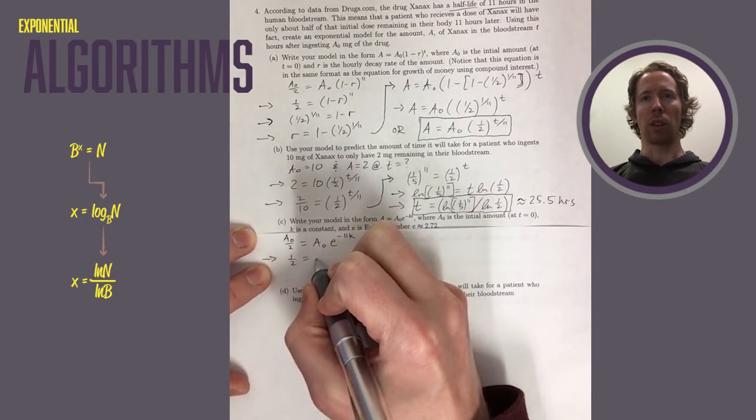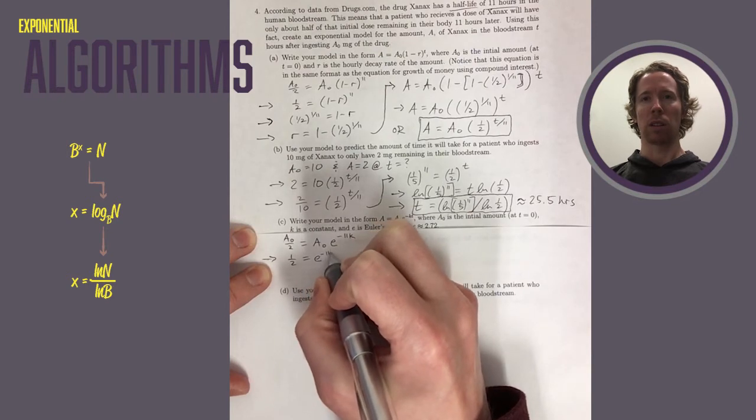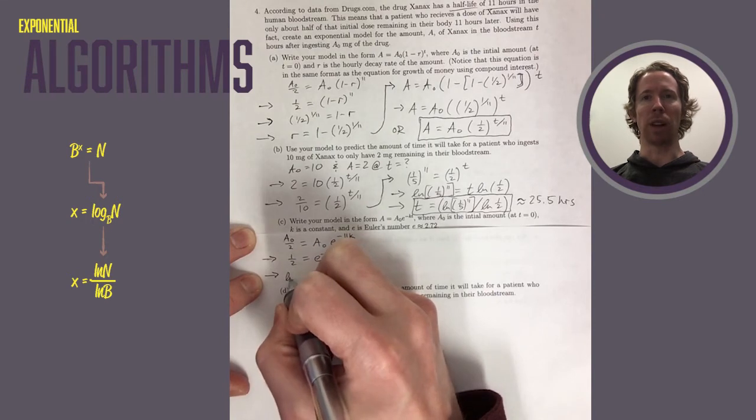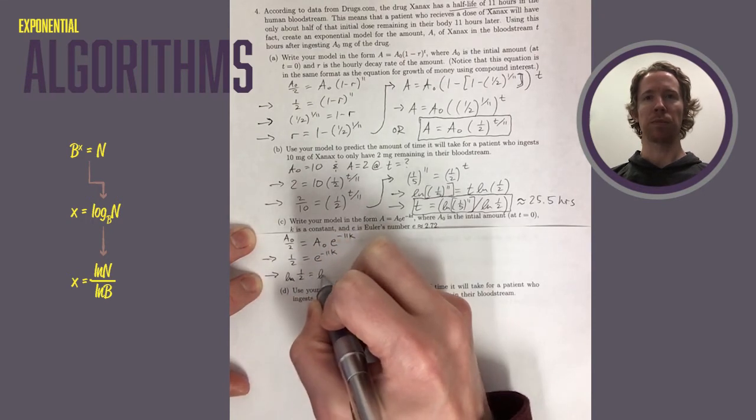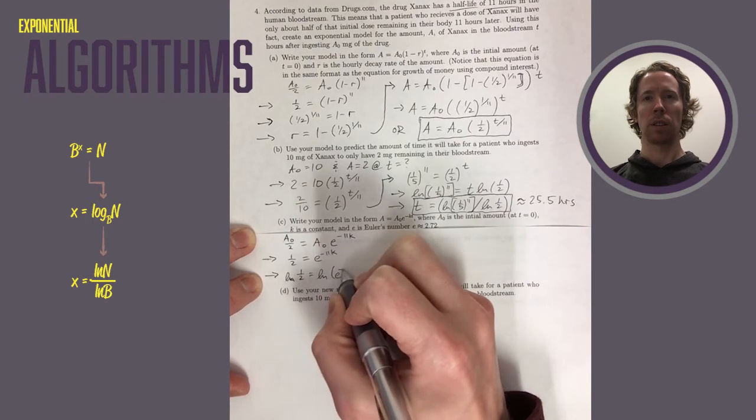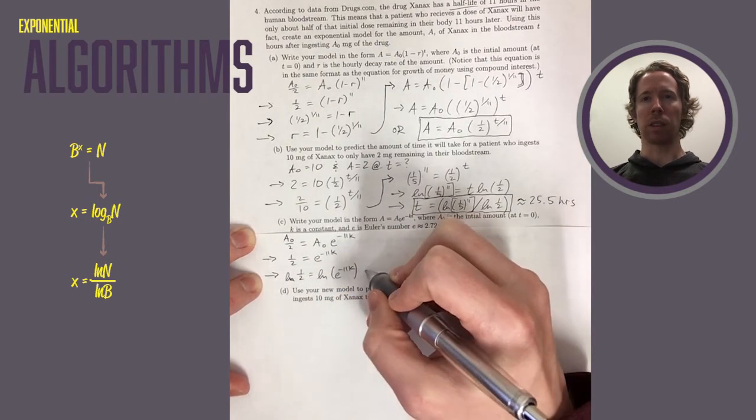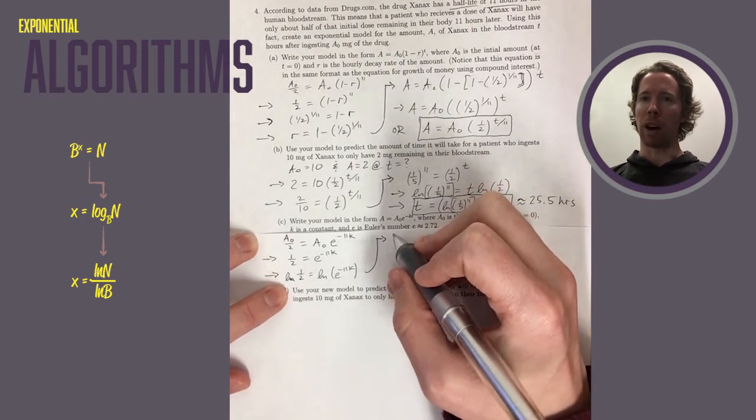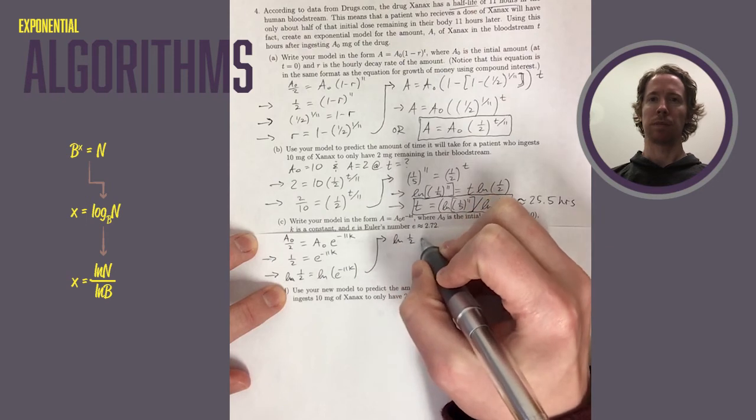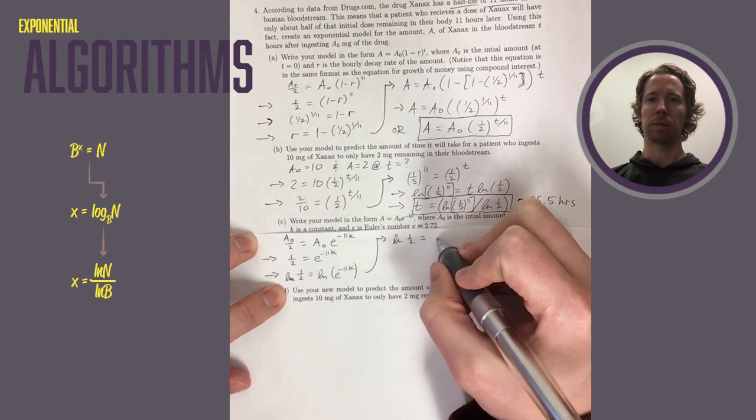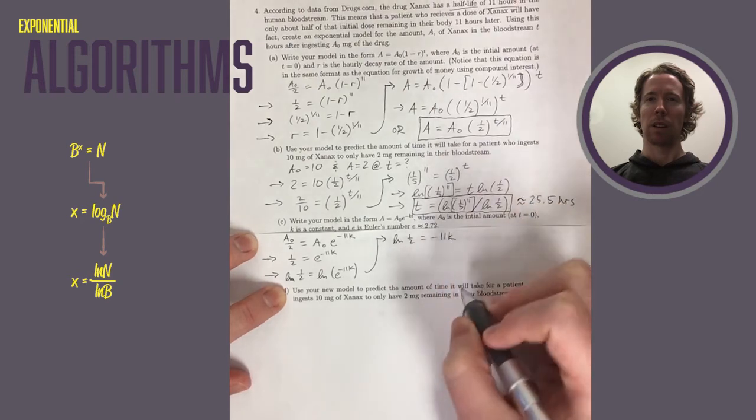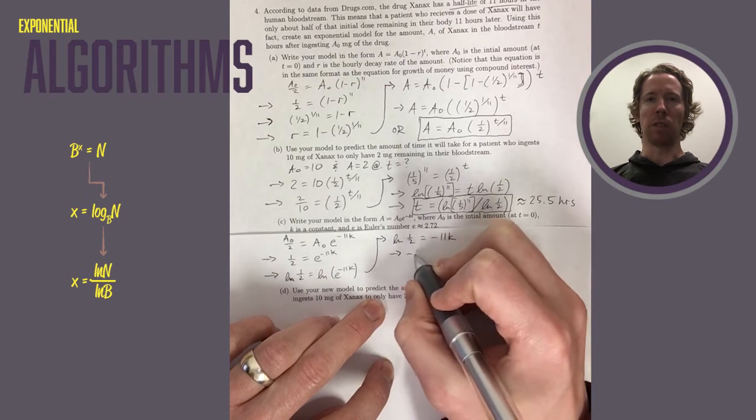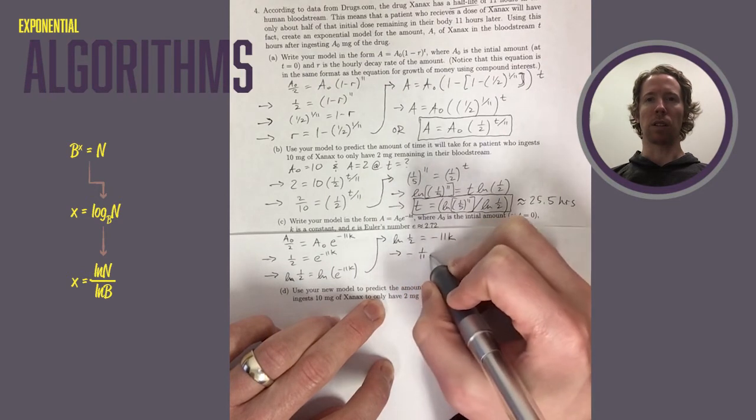Take the natural log of both sides. And on the right, when I take the natural log, it's just going to come out to give me the exponent. Natural log of E raised to an exponent just gives you the exponent. So we get natural log of 1 half is negative 11k. And then we're just going to solve for k by dividing both sides by negative 11. So it kind of looks like k is a negative number here, but it's actually a positive even though there's a negative sign on the left.